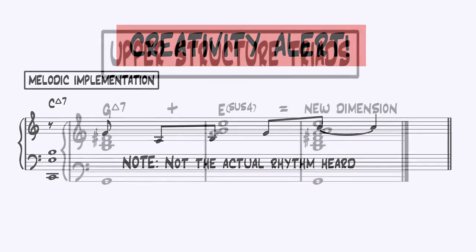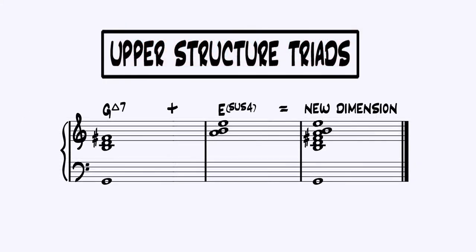Additionally, we can also use sus4 triads as upper structures, which is what we're going to be looking at today. And what an upper structure does is we're placing a triad on top of another chord that will give it a new dimension to the overall chord's sound. Before we start analyzing the upper structures in this piece, let's go ahead and see just how important the sus4 triad is within the entire composition.